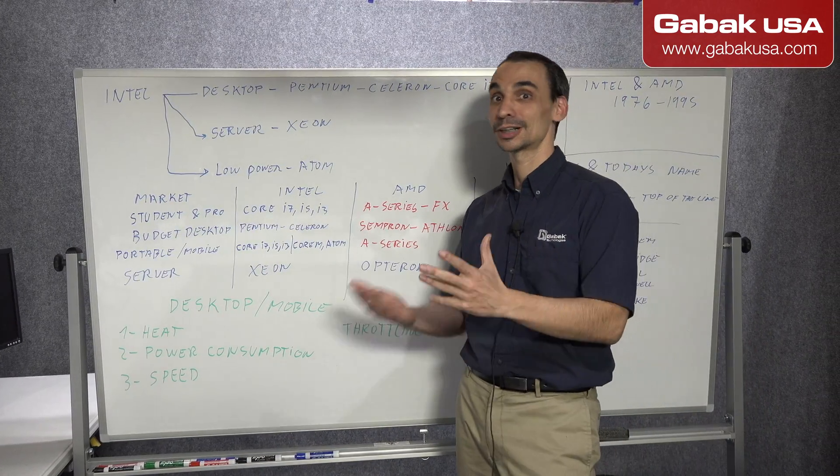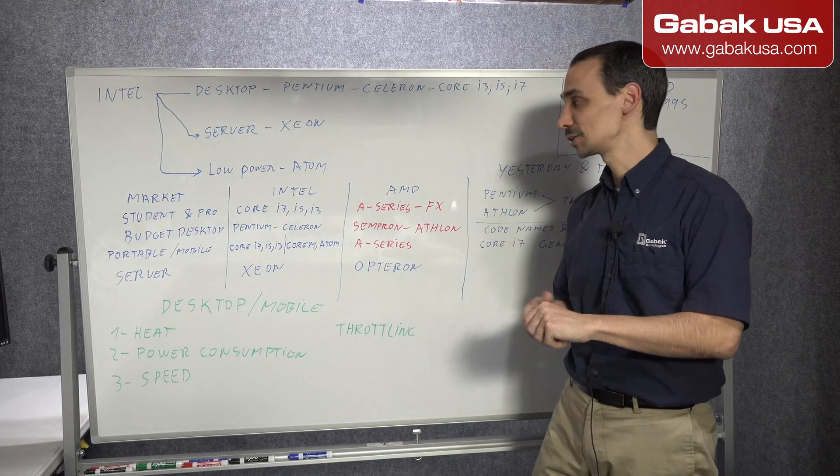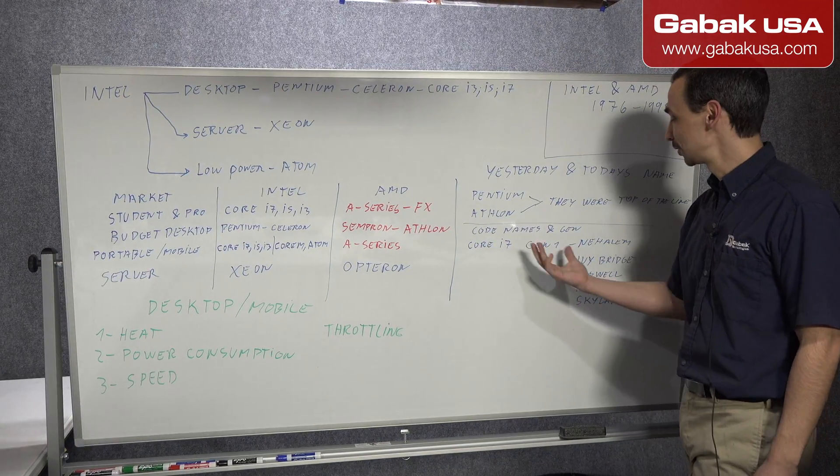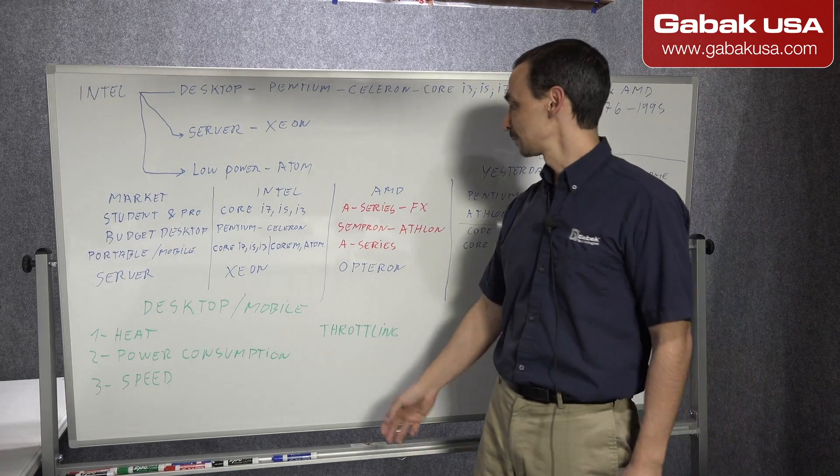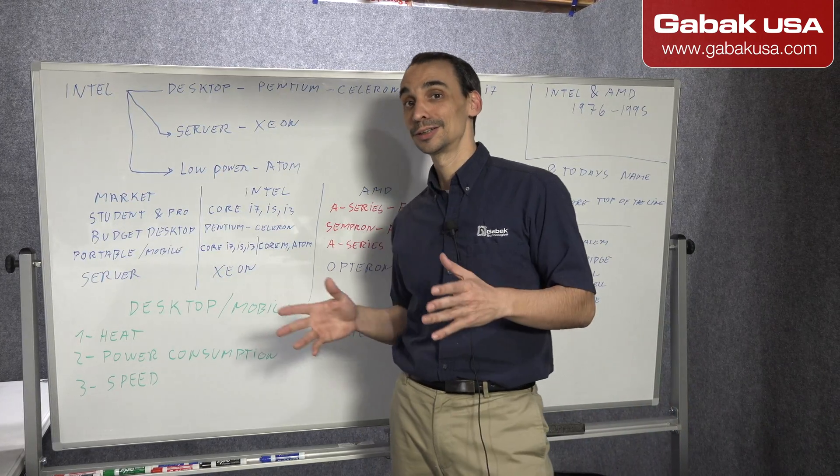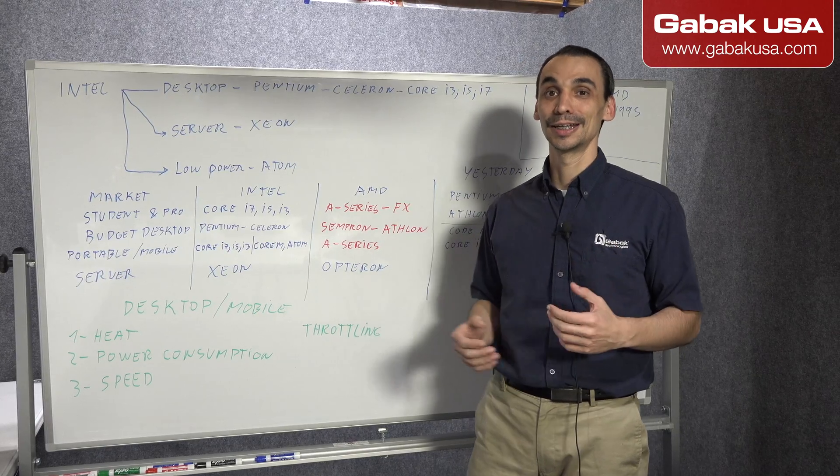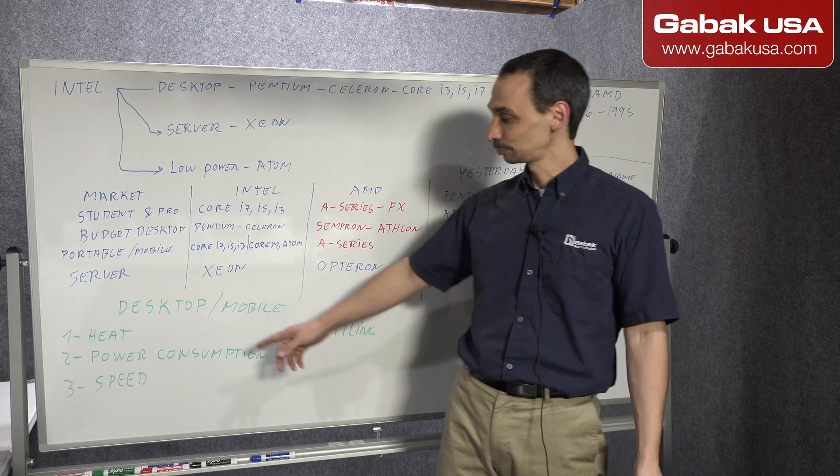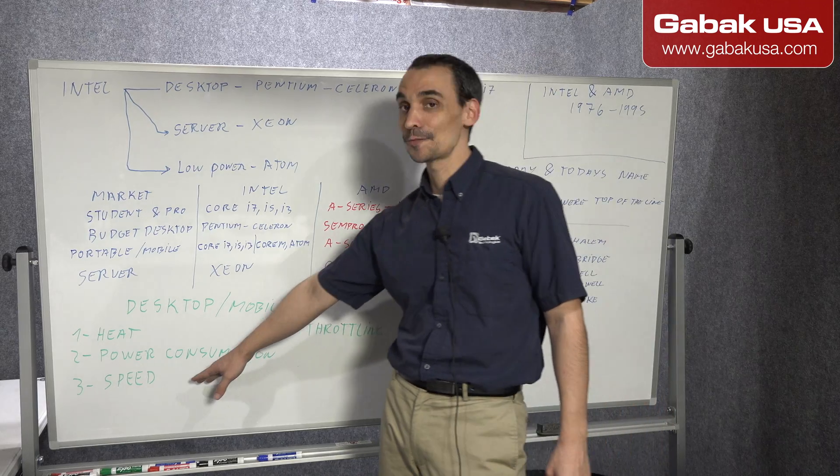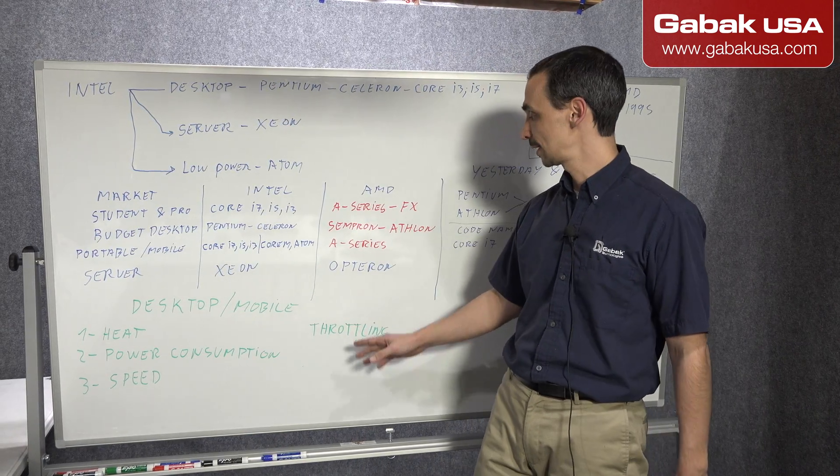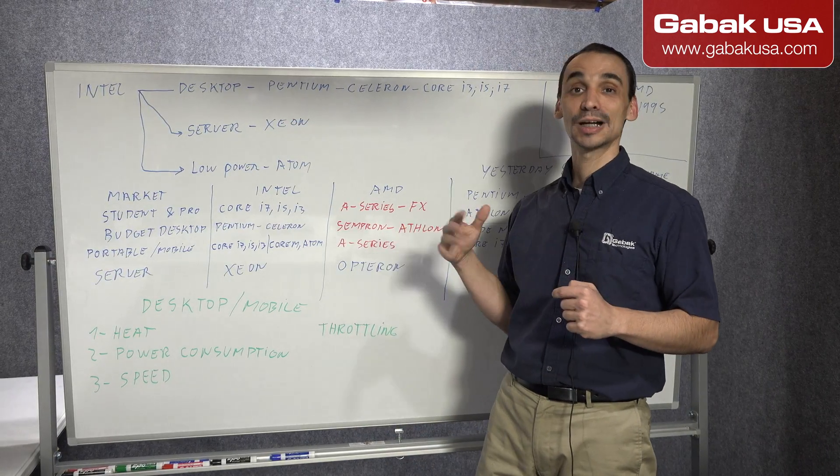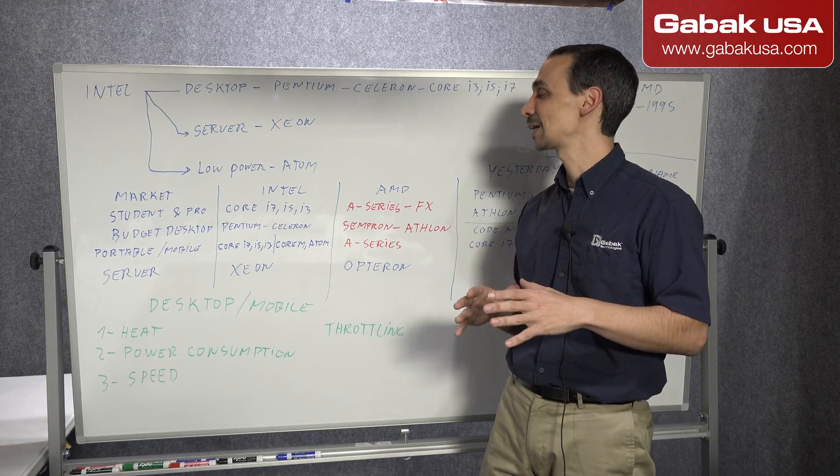So when you start talking with someone, a customer, or you want to upgrade a computer or something like that, you have to know the generation that is very good. I mean, it's very necessary. You can call it by generation or you can call it by the code names or whatever. So now we are going to talk about desktop versus mobile. So usually the processor, besides doing all the math and everything else, crunching numbers, it produces heat. And then it consumes power. And then you have the speed. So what does it mean? It means when you are using the computer all the way, 100%, you're going to have a lot of heat. Even if you don't use it that much, you're going to have heat anyway.